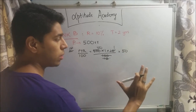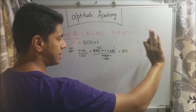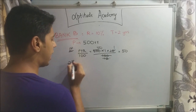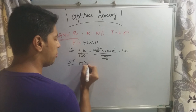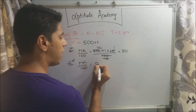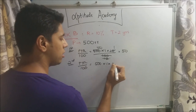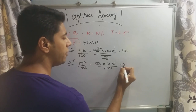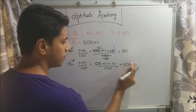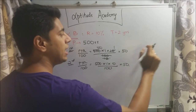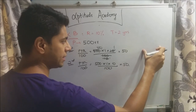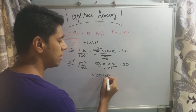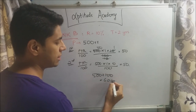In simple interest, this 50 rupees sits aside. For the second year you'd again calculate 500 × 1 × 10 ÷ 100, getting another 50 rupees. These two 50s add up to 100 rupees, and at the end you get 500 + 100 = 600 rupees. That's how Bank A gives 600 rupees.